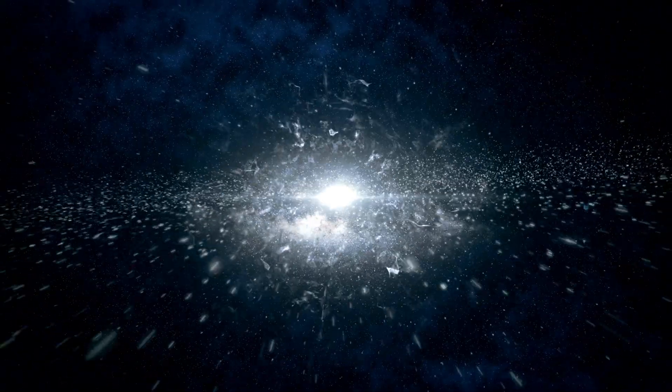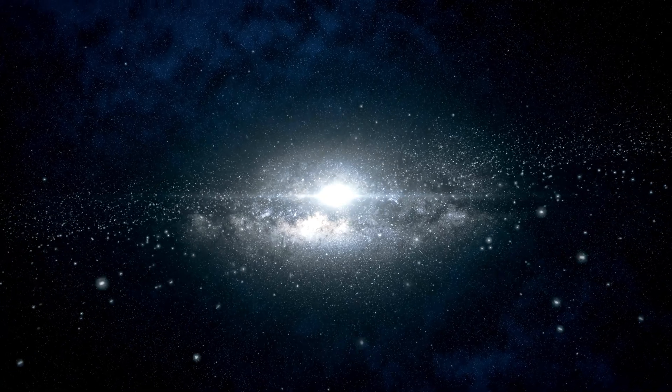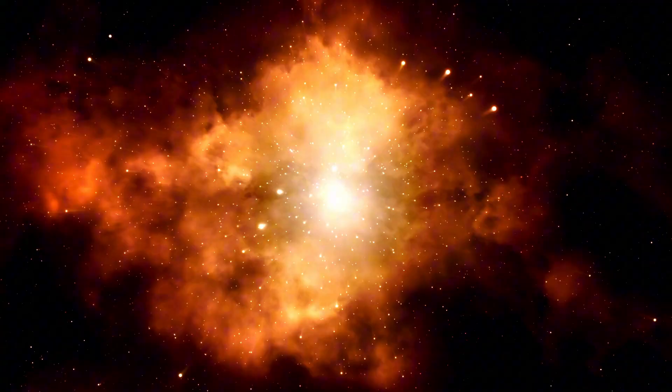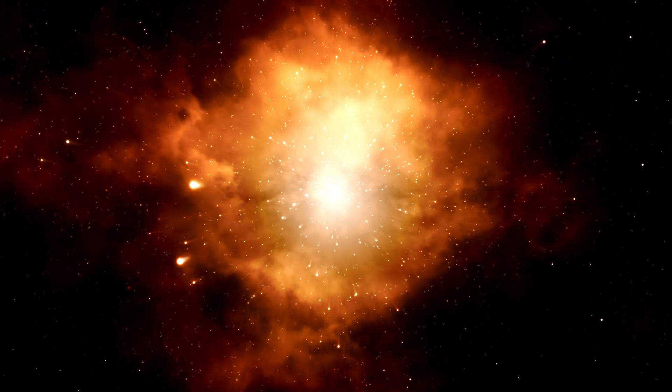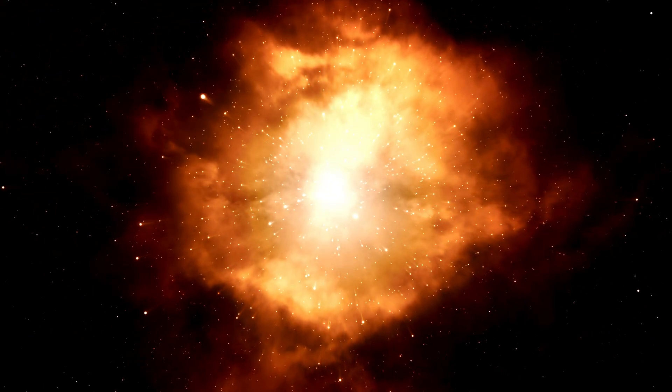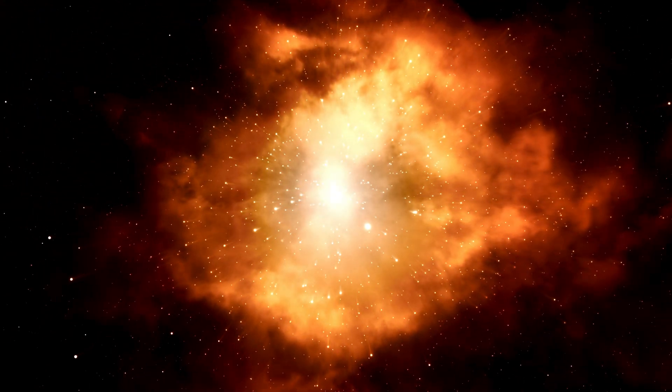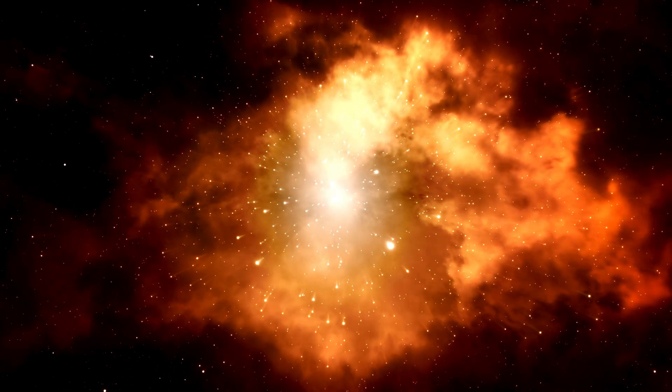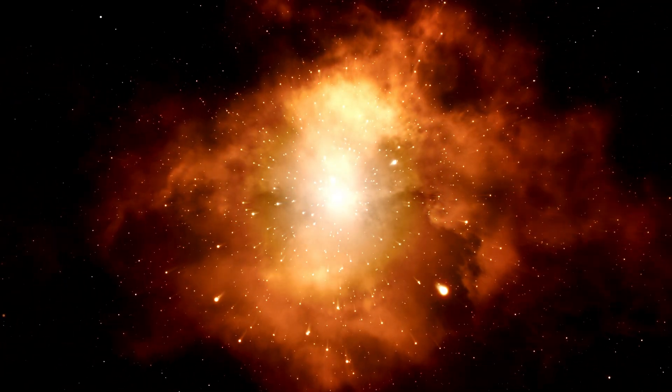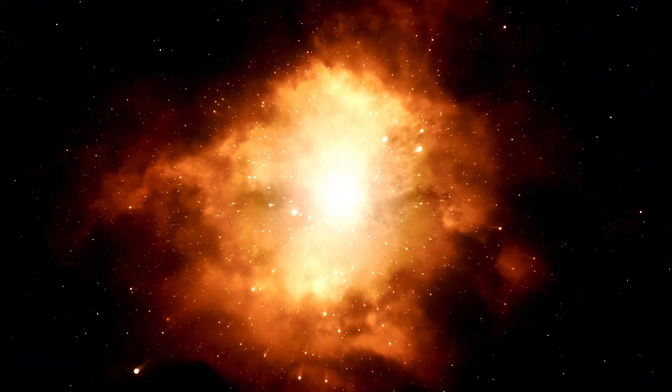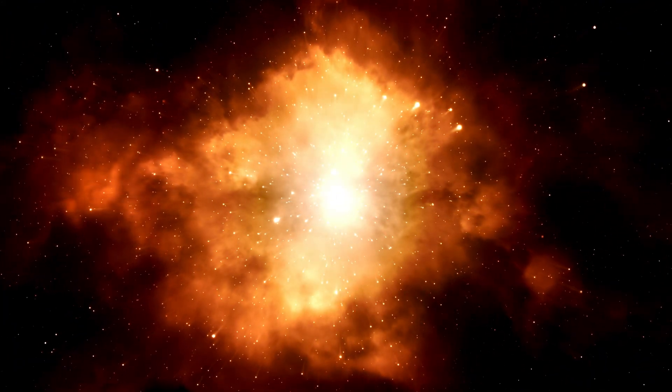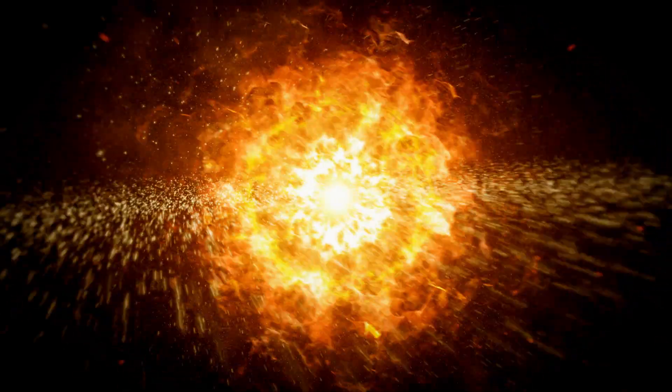Though our solar system has only one star, our sun, you'll be surprised to know that most stars exist in binary systems, meaning a system composed of two stars orbiting each other. When mass equal to that of the sun is squeezed into a volume as small as the Earth, what you get is a white dwarf, thus making a white dwarf a super dense, super hot dead body of a star which once shined bright.